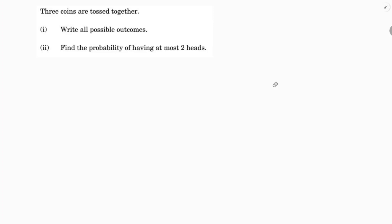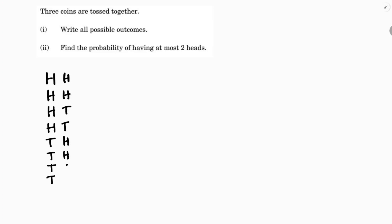To list the outcomes systematically, first write four heads, then four tails, then two heads and two tails, and two heads and two tails. Then write head-tail, head-tail, head-tail, and head-tail using this pattern.